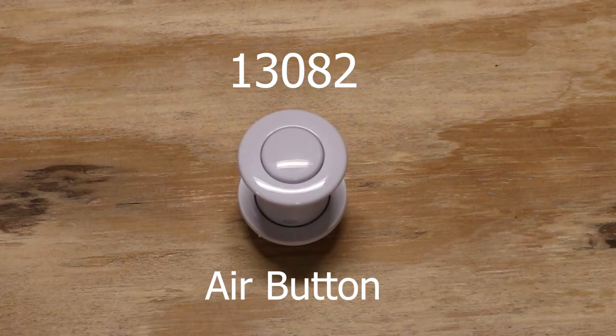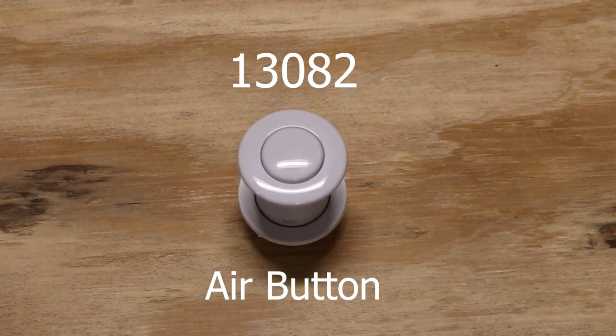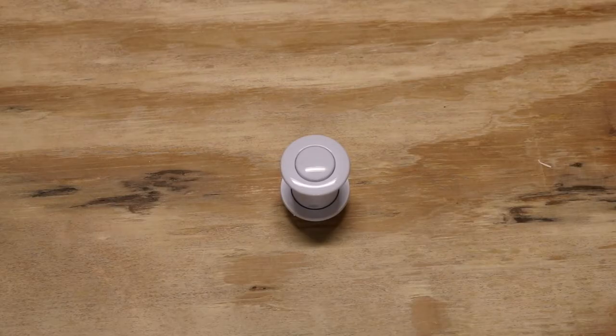Hey folks, AJ here. We're back at my famous workbench. Today we're highlighting the 13082 air button made by Balboa Water Group, also used by Gruber Hydro in a lot of their bathtubs and many other manufacturers. It's widely used in the bath industry. Let's tear this button apart so you guys can figure out if this is the button you need for your whirlpool bathtub.